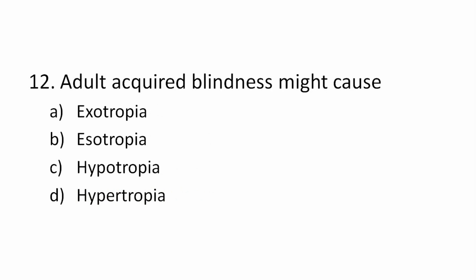Question 12: Adult acquired blindness might cause which type of deviation? Options: exotropia, esotropia, hypotropia, hypertropia. The correct answer is exotropia. In adults, acquired blindness leads to exotropia. However, in children, sensorial deprivation causes esotropia, because the convergence system is still active and deviation goes toward esotropia. In adults, the tendency is toward exotropia.